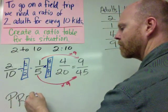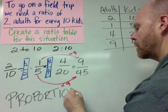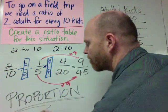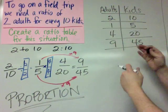So when you have a collection of equivalent ratios, you have a proportion. And so this table is a ratio table.